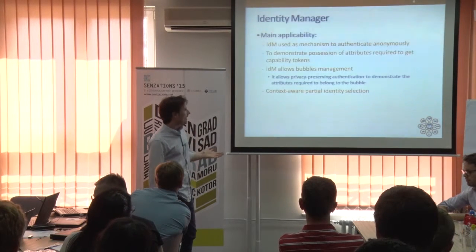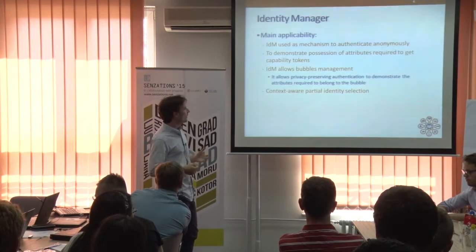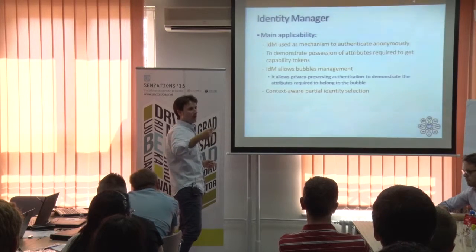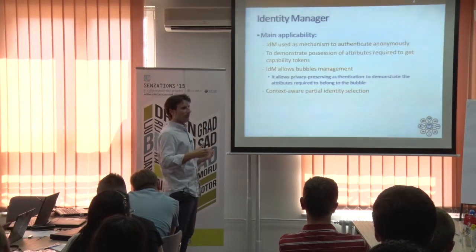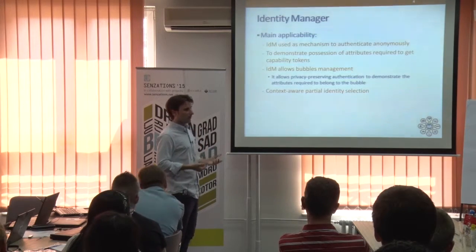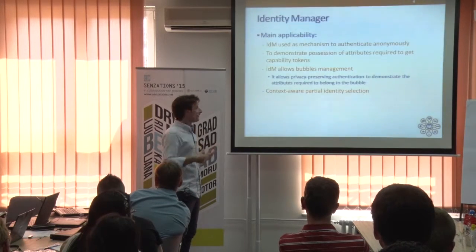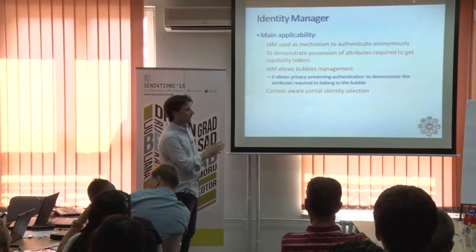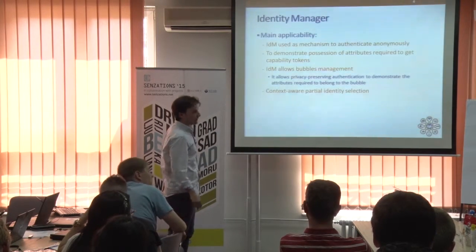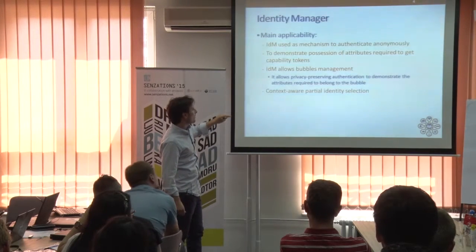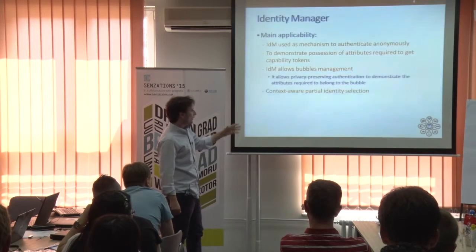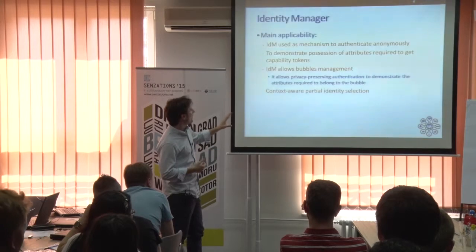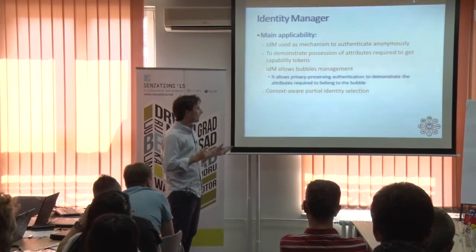You can use the IDM to demonstrate that you are in possession of some attributes required to get capability tokens, which is important because the PDP when making the authorization decision is going to require certain attributes in order to allow you to obtain an authorization token. A way of proving that you satisfy certain identity attributes is to use the IDM and show your partial identity to the capability manager. It also allows bubble management to prove that you are in possession of the identity attributes required to belong to a particular bubble or community. The IDM is also context-aware, changing your partial identity according to context.